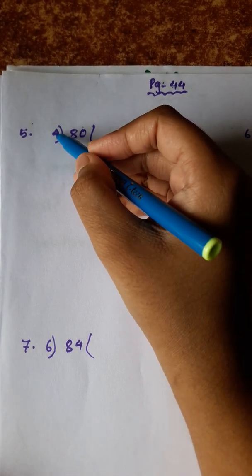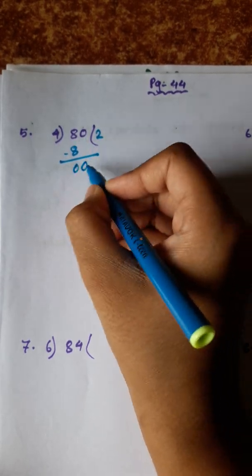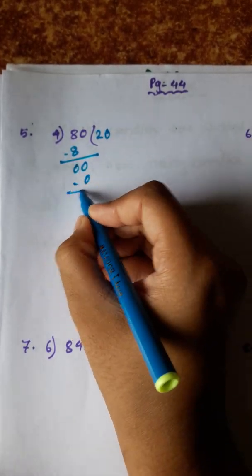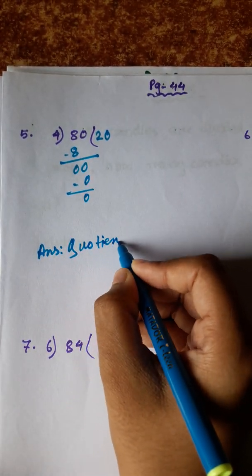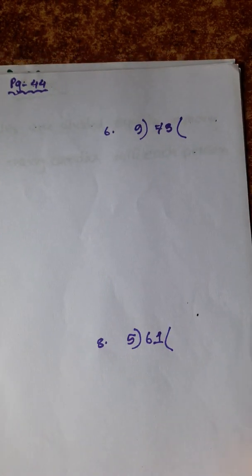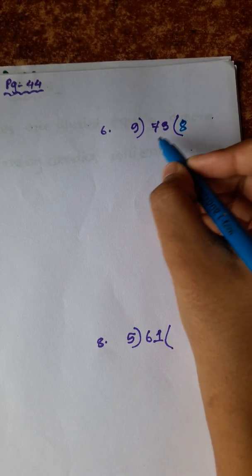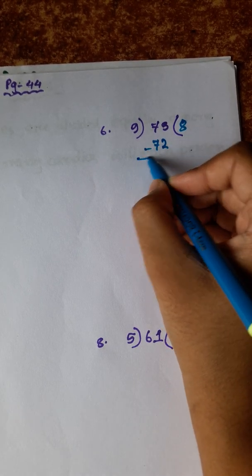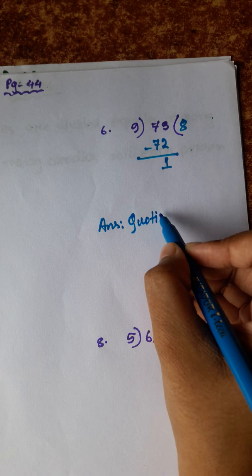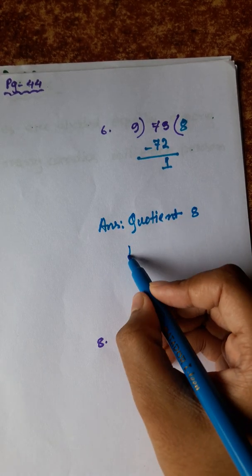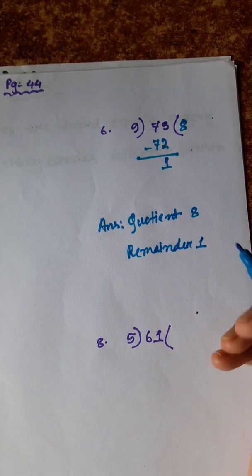Now, 4 ones are 4, 4 twos are 8, so 4 twos are 8, 0, 4 zeros are 0. So answer is quotient 20. Now, 8 nines are 72, remaining is 1, so therefore quotient is 8 and remainder is 1.